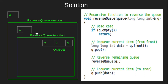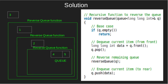Thus, in the reverse queue function, we check if the queue is empty or not. Here, the queue is not empty. Thus, we'll store the front element in data and dequeue the queue, i.e. pop 2. Now, we'll call the reverse queue function for the remaining queue.